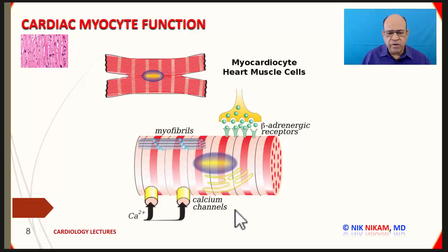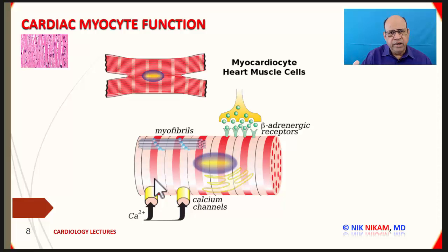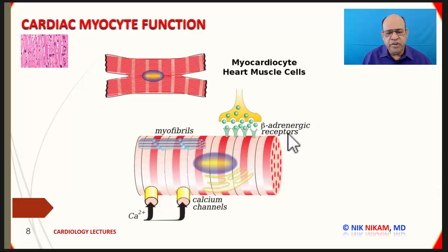These myocytes also have calcium channels connected to the sarcoplasmic reticulum. It is through the sarcoplasmic reticulum and through the T-tubules where calcium enters the myocytes, which begins the activation of the myocardium — first through electrical activation followed by mechanical activation — leading to shortening of the actin-myosin complex. In addition, there are also beta-adrenergic receptors located on the myocytes which activate or inhibit myocardial contractility.